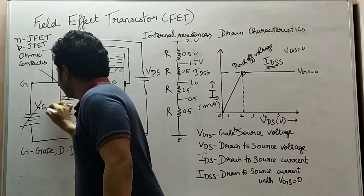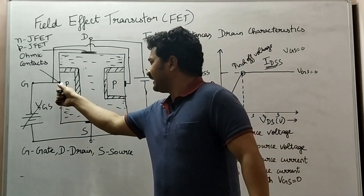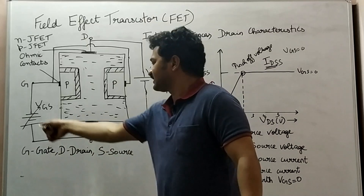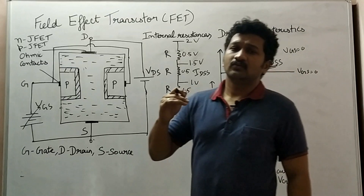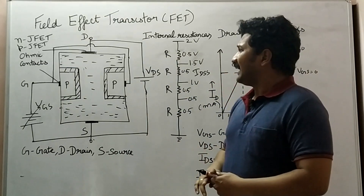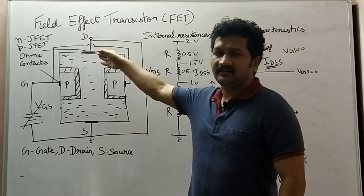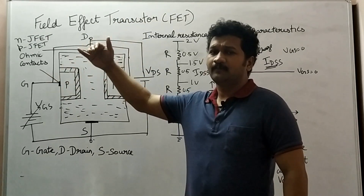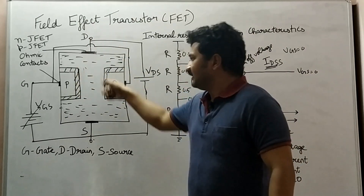This is VGS. The P layer of the gate is connected to negative and the source is connected to positive, so this is reverse biased. Now we have to take into consideration two important concepts: what happens to the drain-to-source voltage, and whether its level increases or decreases compared to the previous case — and what happens to the depletion region.